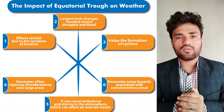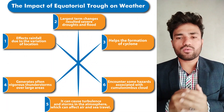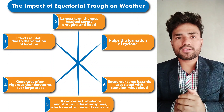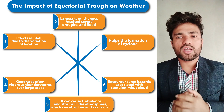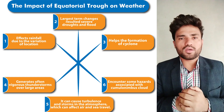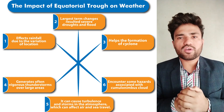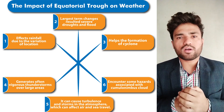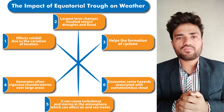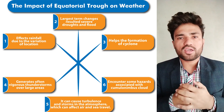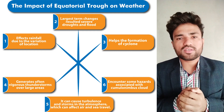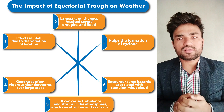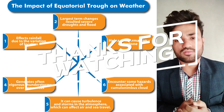The impact of the equatorial trough on weather: 1. It affects rainfall due to the variation of location. 2. Long-term changes result in severe droughts and floods. 3. It helps the formation of cyclones. 4. It generates often vigorous thunderstorms over large areas. 5. It can cause turbulence and storms in the atmosphere, which can affect air and sea travel. 6. It encounters some hazards associated with cumulonimbus clouds.